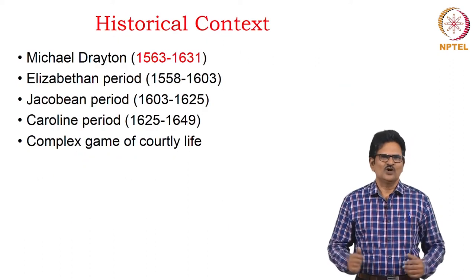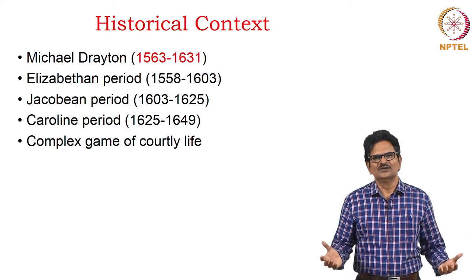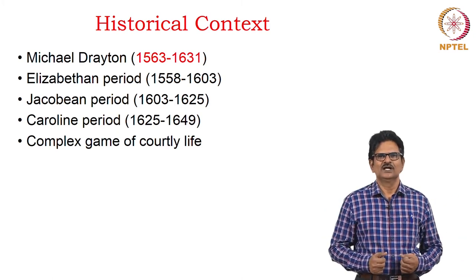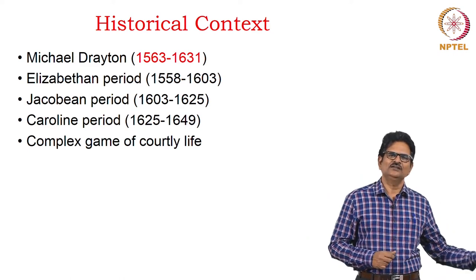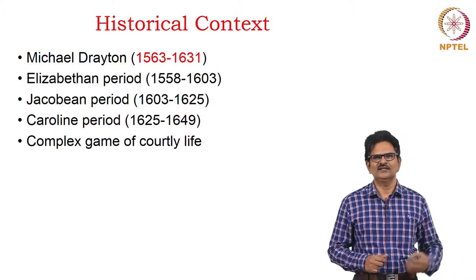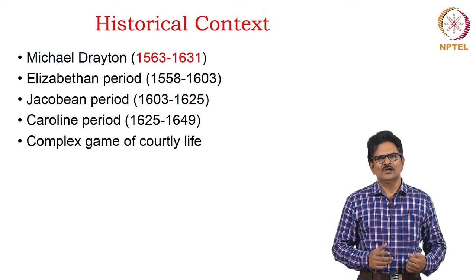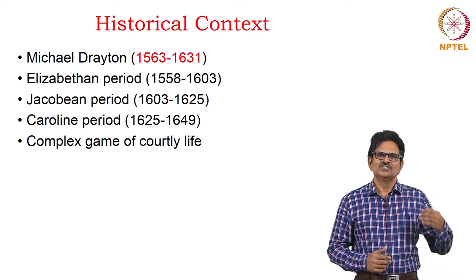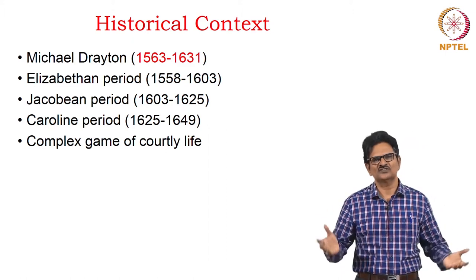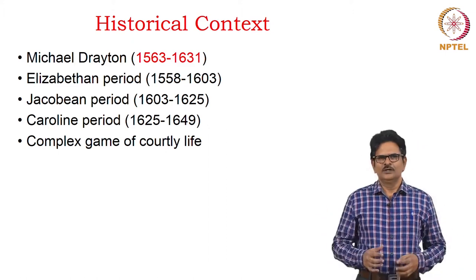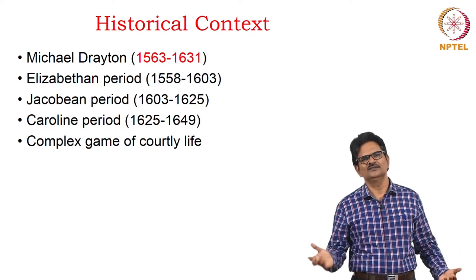Michael Drayton was born in 1563, when Queen Elizabeth was Queen of England. He continued his life into the Jacobean period as well, when King James was ruling the country. After the death of King James, Charles I became the king, and even at that time Drayton was writing and contributing to English poetry. So Michael Drayton belongs to both Elizabethan poetry and early seventeenth century poetry.